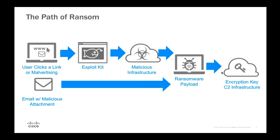The mechanism works fundamentally the same way with email. The only difference is the transport — an email arrives with a link that's been allowed through. You click the link and the whole process starts again: it calls out to the exploit site, then the payload site, and you end up ransomed once again.